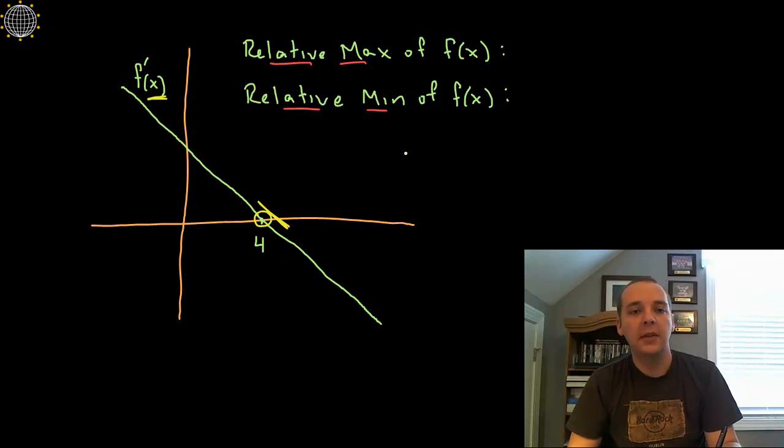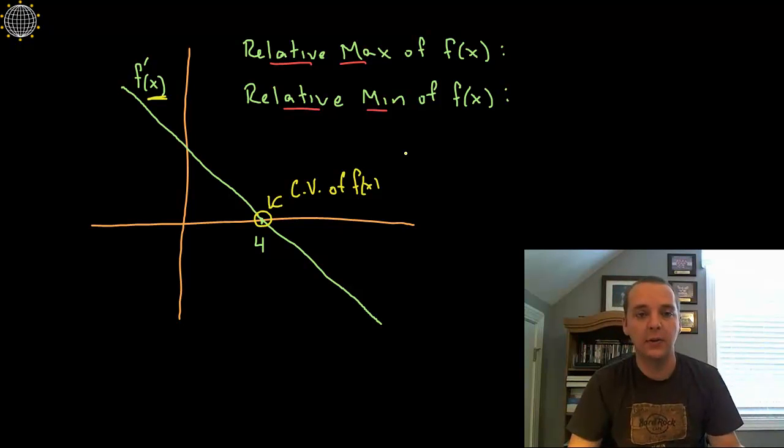Well let's clarify: the slope of the derivative is not zero but F prime itself is zero, so that means this is a critical value. Let's clarify this is a critical value of the original function because the derivative equals zero, it's an X intercept of the first derivative.